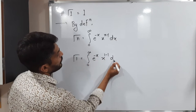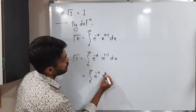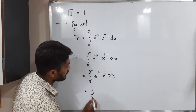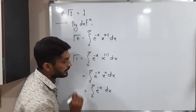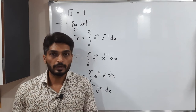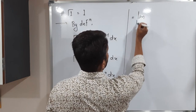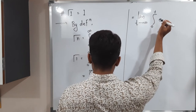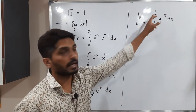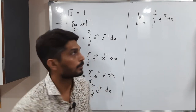1 minus 1 is 0, so this is equal to integration from 0 to infinity of e raised to minus x, times x raised to 0, dx. We know that anything raised to 0 is always 1, so it becomes integration from 0 to infinity of e raised to minus x dx. Since the limit is infinity this is an improper integral, so we express it as: limit as t tends to infinity of integration from 0 to t of e raised to minus x dx. This has the same meaning.